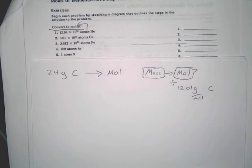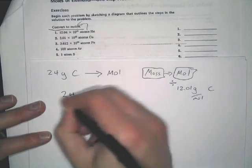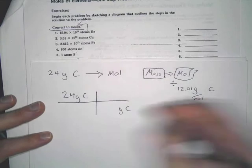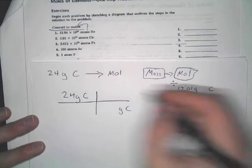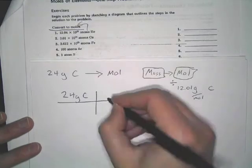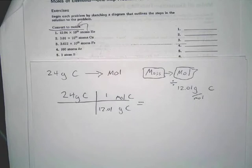All right, now you just simply write it out. You plug it in. 24 grams carbon divided by, well, grams of carbon on the bottom. You're going to moles, so moles of carbon must go on the top. Your conversion is one mole to 12.01 grams. What's your answer come out to be here?